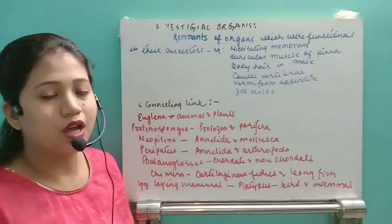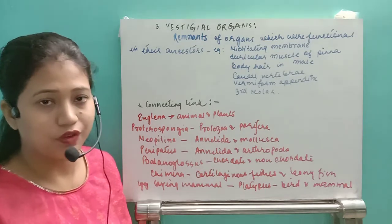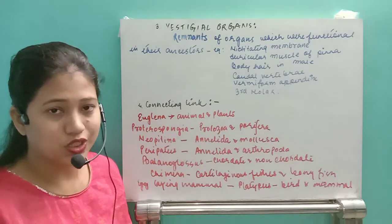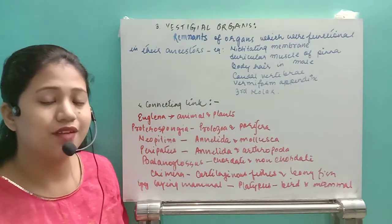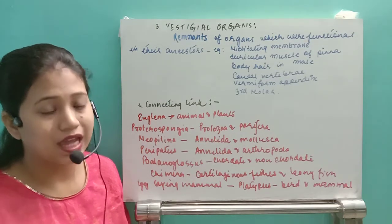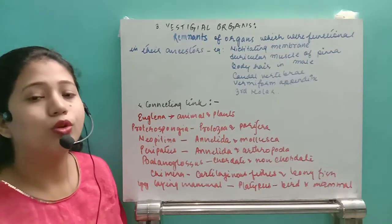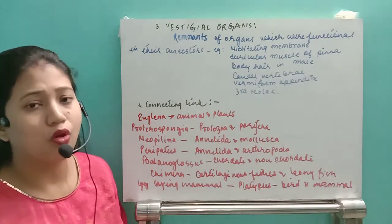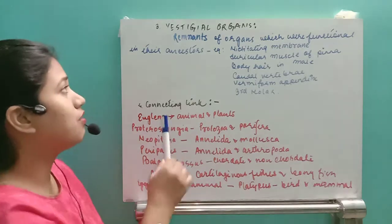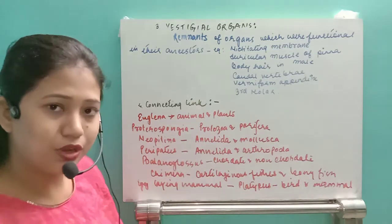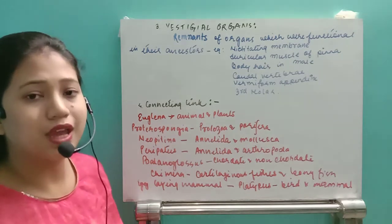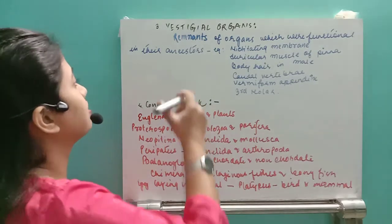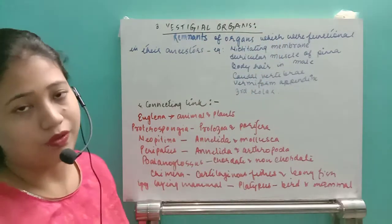Hello students, today we are going to start the next part: the evidences of evolution. In two previous videos we have seen the first evidence — paleontological evidence — and the second evidence — morphological and anatomical evidence — where we saw homologous and analogous organs. The third type under morphological and anatomical evidence is the vestigial organ.